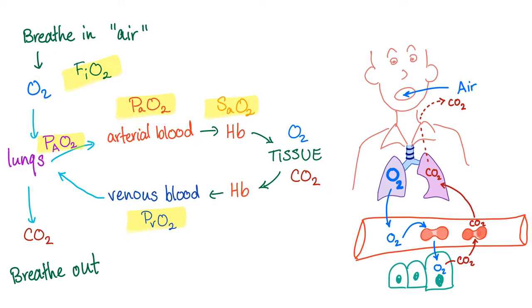You breathe the air in and the atmosphere has 21% oxygen — this is called FiO2. Then oxygen in the lung is called PAO2. On the arterial blood it's called PaO2. It jumps on the hemoglobin as SaO2, then to the tissue. Hypoxia is here — when you have a problem delivering oxygen to the tissue, this is called hypoxia. CO2 comes out, jumps on the hemoglobin. The amount of oxygen in the venous blood is called PvO2, and then it goes back to the lung and is exhaled.